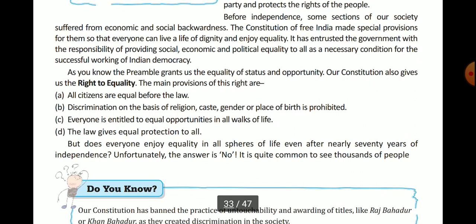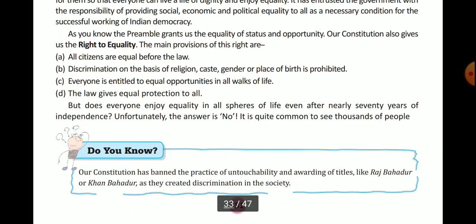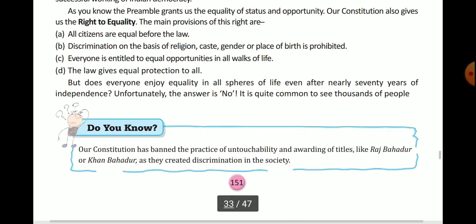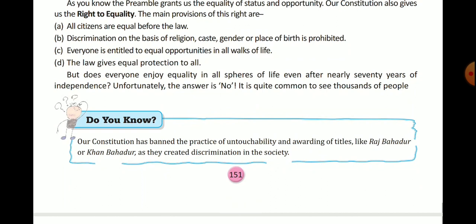As you know, the preamble grants us the equality of status. The constitution has also given us the right to equality. The right to equality includes: all citizens are equal before the law; discrimination on the basis of religion, caste, gender, or place of birth is prohibited; everyone is entitled to equal opportunity in all walks of life; and the law gives equal protection to all.